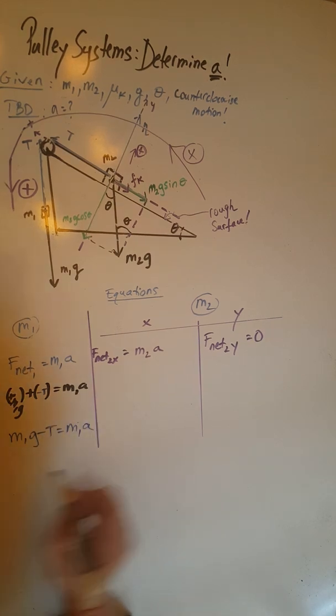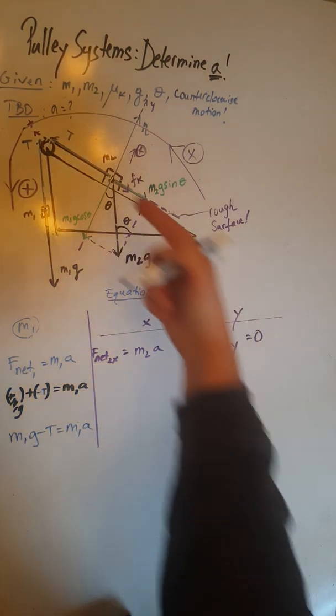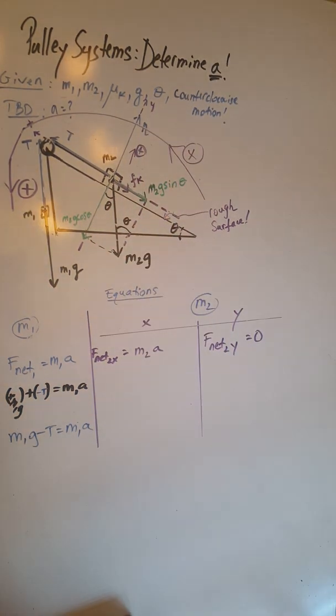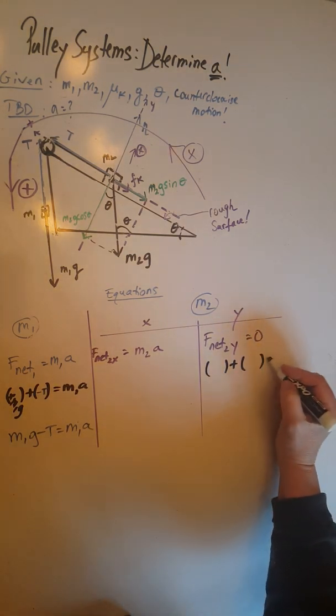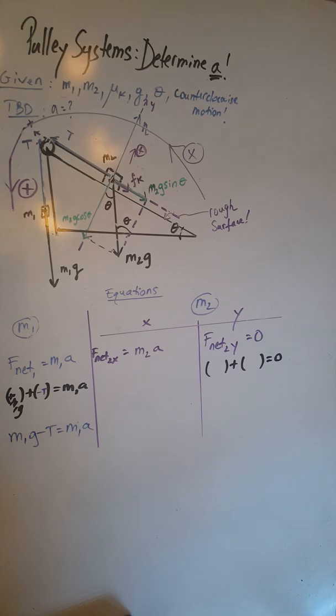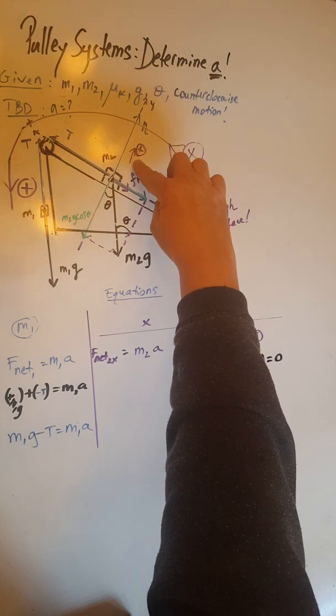For F net 2, let's start with F net 2y. Here we have two forces going in the y direction, so two forces whose vector sum equals zero. One of them is the positive normal force since I picked positive to be upward here, so positive N.